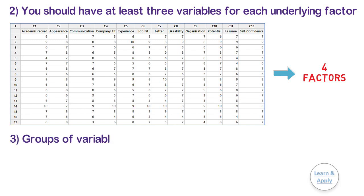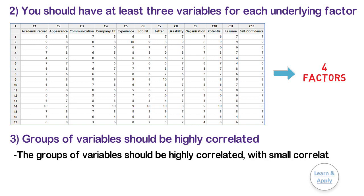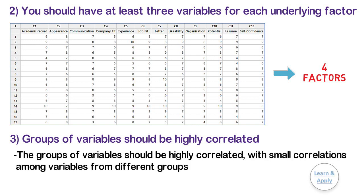Third, groups of variables should be highly correlated. For the analysis results to be useful, groups of variables should be highly correlated, with small correlations among variables from different groups.